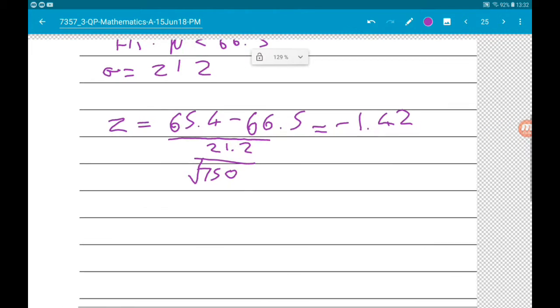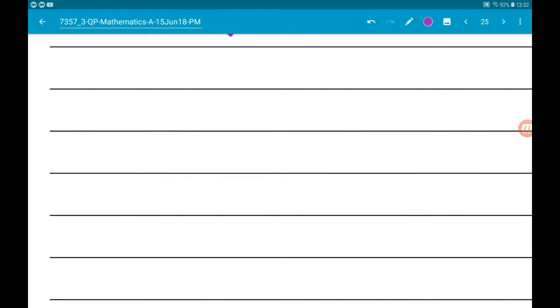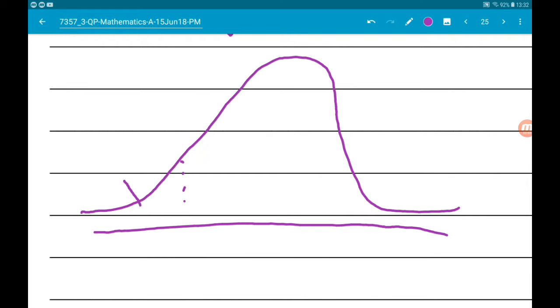Now what we also need to do is find the critical z-value, so that means the value such that we have an area of 0.1 on the left. So we can use our calculator for this.